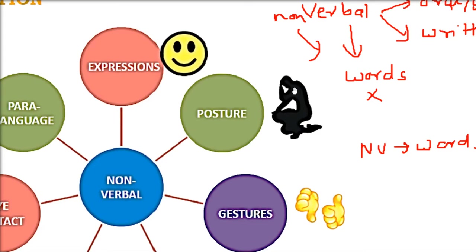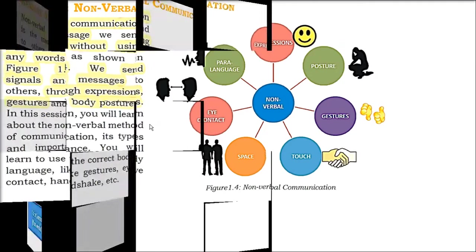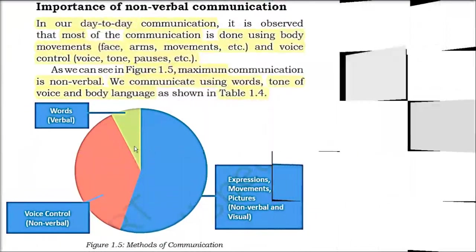Posture — if you sit on a chair or sofa with your hand on your forehead, that means you are in some trouble or you are tired. Your posture is very important. Coming to expressions — see this smiley: if I just change the lip angle, it will be something completely different.